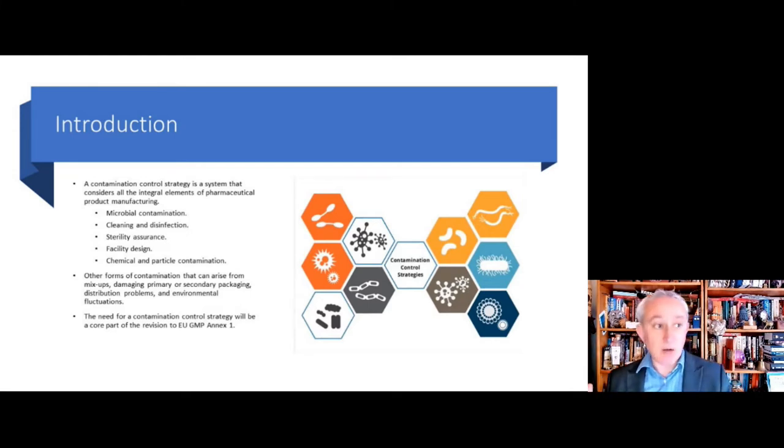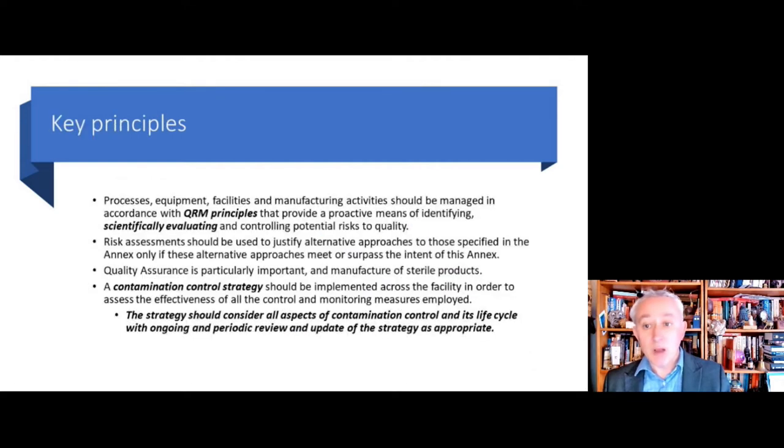So let's consider what we mean by contamination control strategy. There are some key principles borne out in the latest draft of EU GMP Annex 1. Contamination control strategy considers process equipment and facilities and the totality of manufacturing and laboratory activities, and it indicates that these should be managed in accordance with quality risk management principles, which are tools to provide a proactive means for identifying, scientifically evaluating, and controlling potential risks to quality.